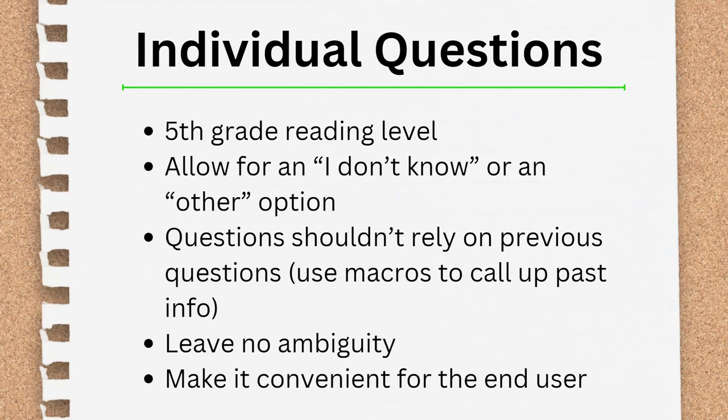Let's finish off the storyboard section by talking about the individual questions. This will be covered more in depth in the next video on plain language. But when drafting language for your pro se friendly interviews, you should always shoot for a 5th grade reading level. This plain language approach ensures that your content will be understood by the majority of adults. When you're building out your questions, be careful about assuming what end users will know — what may seem like common knowledge to you as an educated legal professional in a calm setting may not be so for someone in a stressful legal situation. So allow for an other or an I don't know option in your field choices. Questions shouldn't rely on prior questions to be answered. If you ask the user about something in a previous question and need to do a follow-up, remind them of what they already told you. There's a technique in A2J Author called using a macro that allows you to call up the value of a variable and display it back to the end user.